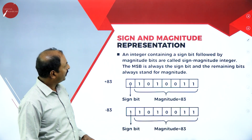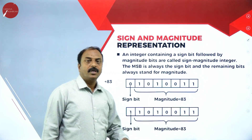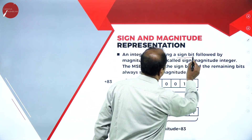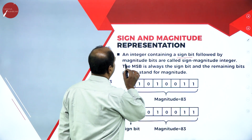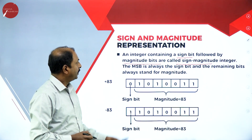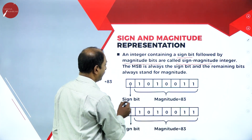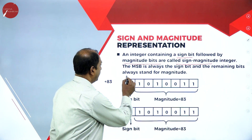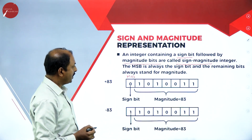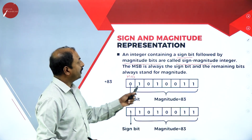The first method is sign and magnitude representation. An integer containing a sign bit followed by magnitude bits is called a sign and magnitude integer. The MSB is always the sign bit and the remaining bits always stand for magnitude. Here, the first bit is the MSB, that is the sign bit, and the rest are magnitude bits.